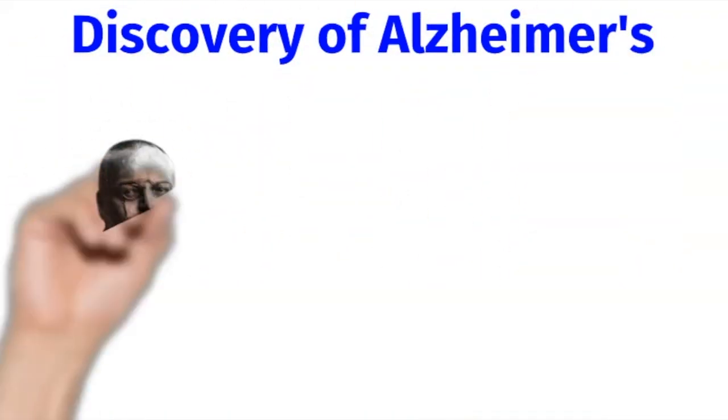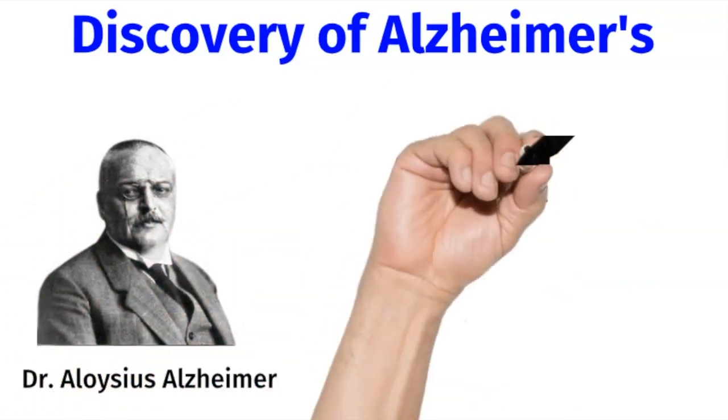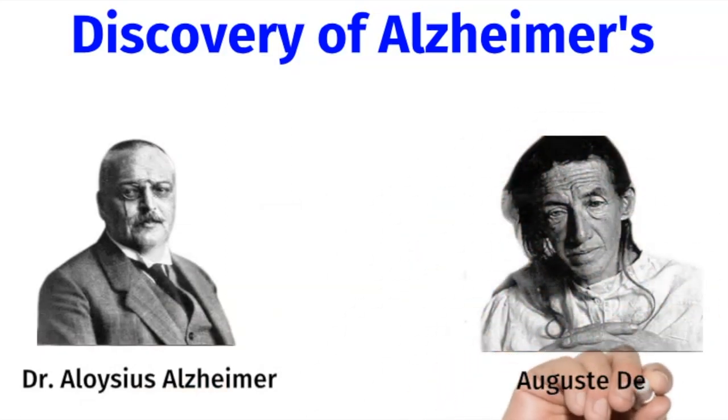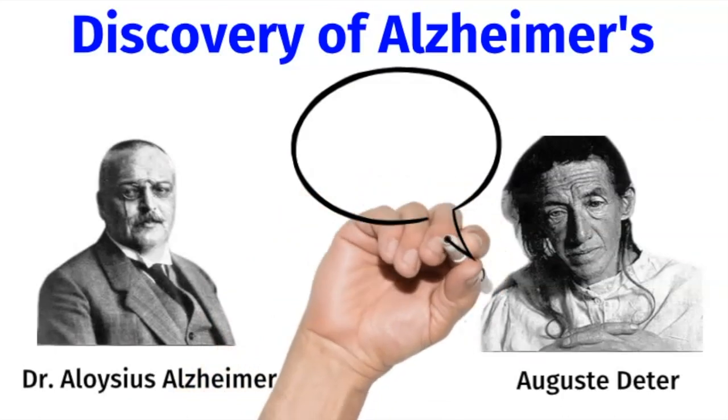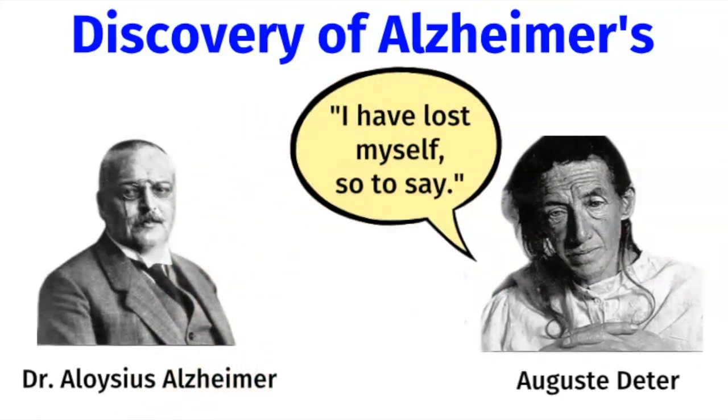Alzheimer's disease was first described by a German psychiatrist, Dr. Aloysius Alzheimer, in 1901. He took care of a 50-year-old woman who was admitted for paranoia, progressive sleep and memory disturbance, aggression, and confusion until her death five years later. He then performed an autopsy and studied her brain, and under the microscope, he found something interesting.